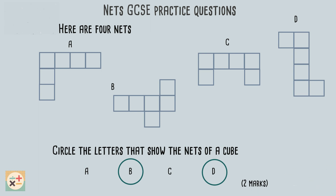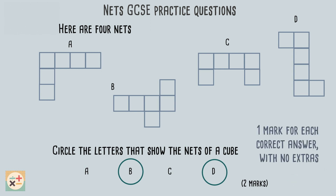The question is worth two marks, and we would get one mark for each correct answer, but we would lose a mark if we circled an extra incorrect answer.